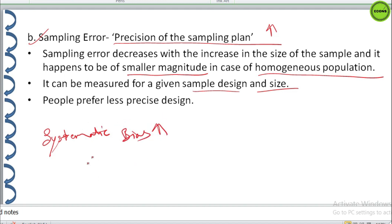So, the effective way to increase precision is usually to select a better sampling design which has a smaller sampling error for a given sample size at a given cost. And, in practice, people prefer a less precise design because it is easier to adopt it and also because of the fact that systematic bias can be controlled in a better way in such a design.